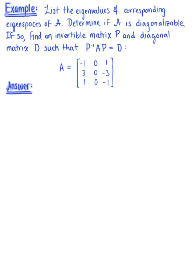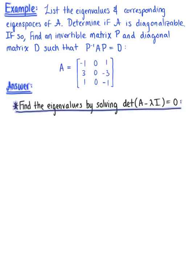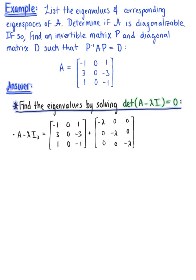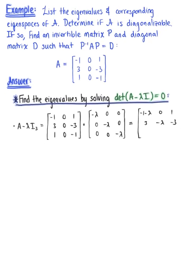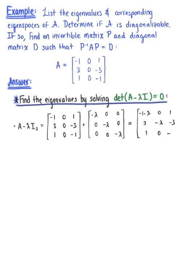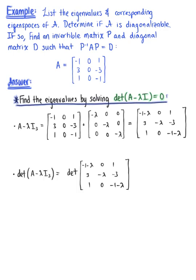In order to list the eigenvalues, we need to solve the characteristic equation by finding the determinant of matrix A minus lambda times the 3 by 3 identity matrix. Combining like terms across row 1 gives minus 1 minus lambda, 0, 1; row 2 gives 3, negative lambda, negative 3; and row 3 gives 1, 0, minus 1 minus lambda. Now that we have this 3 by 3 matrix, we're ready to compute the determinant.